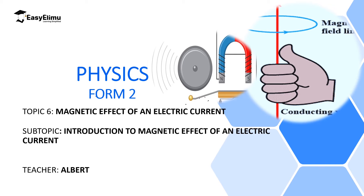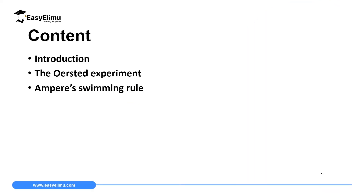My name is Albert. I hope you will enjoy the lesson and the topic in general. By the end of this lesson, I expect you to be able to describe the introductory part of the magnetic effect of an electric current, then discuss the Hans Oersted experiment, then later define the Ampere Swimming rule of determining the direction of magnetic field around a conductor which is carrying current.